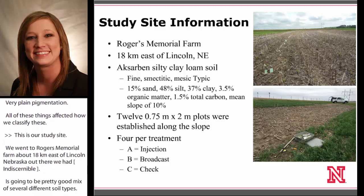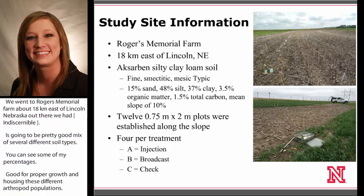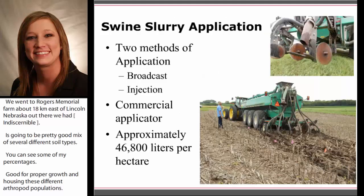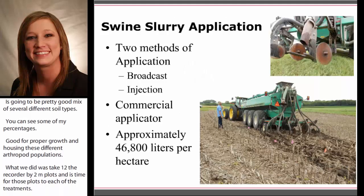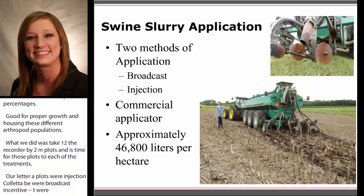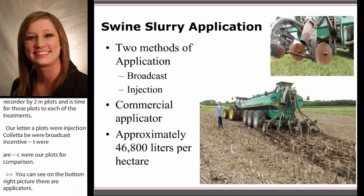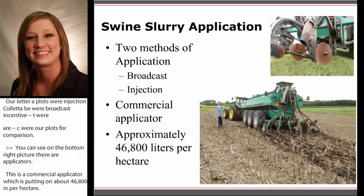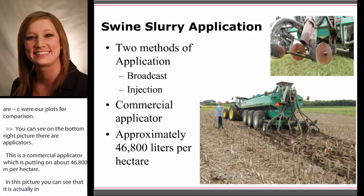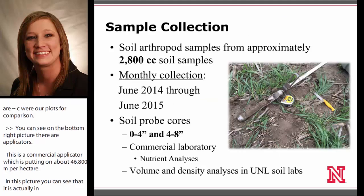We took twelve three-quarter by two-meter plots and assigned four of those plots to each of our treatments. Our A plots were injection, B were broadcast, and C were our check plots for comparison. In the bottom right picture, you can see our applicator — a commercial applicator putting on about 46,800 liters per hectare. For broadcast, we just lifted the injector above the soil and it deposited the same volume of slurry to the broadcast area.